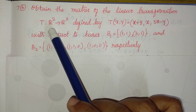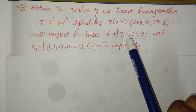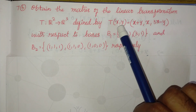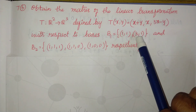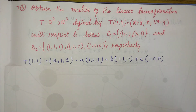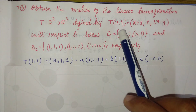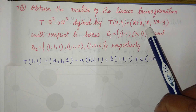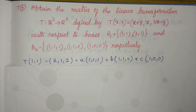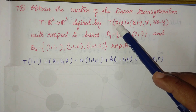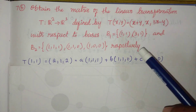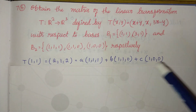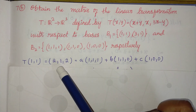The domain is R2 with basis vectors (1,1) and (3,1). Using the given transformation T(x,y), first find T(1,1) and T(3,1). For T(1,1), put x=1 and y=1: x+y gives 1+1=2, x gives 1, and 3x−y gives 3(1)−1=2. So T(1,1) = (2, 1, 2).